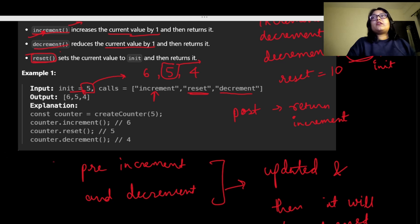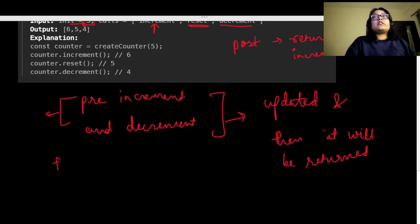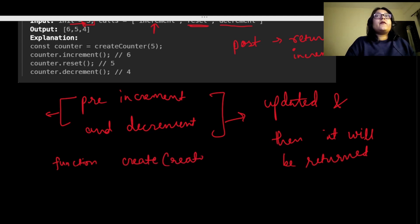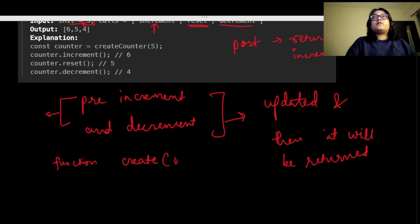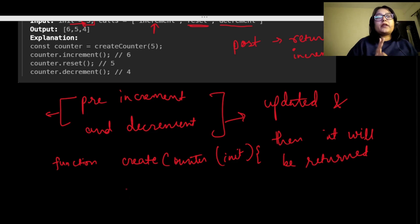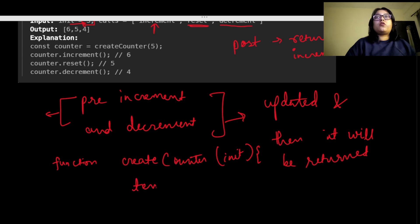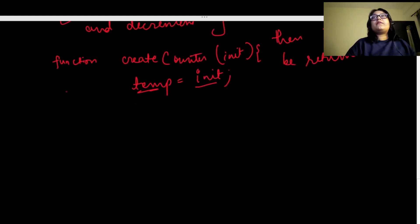For reset, we need to store the initial value in a temporary variable so we can reassign it back whenever reset is called. The outer function is createCounter. We pass init as the initial integer. We store a copy of init in a temporary variable, then create three functions: increment, decrement, and reset.